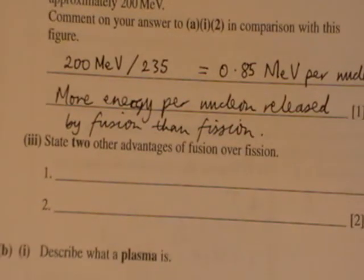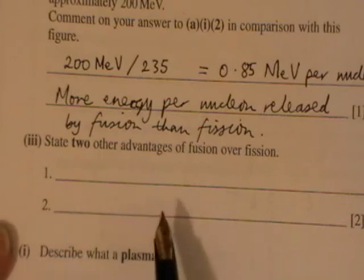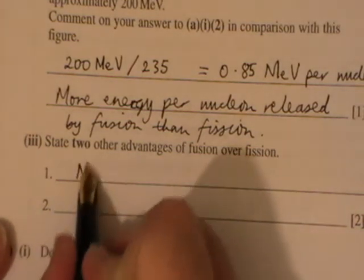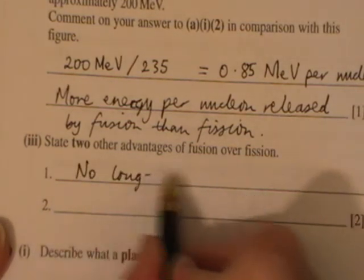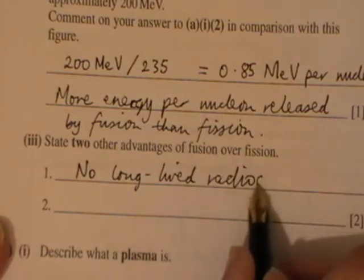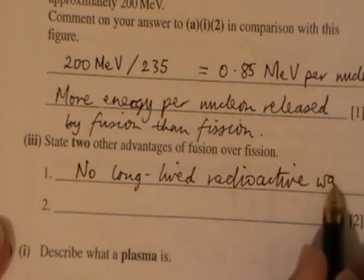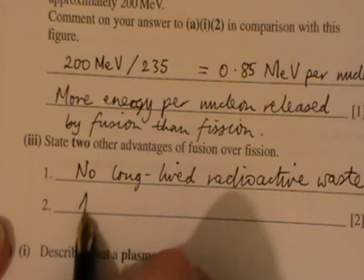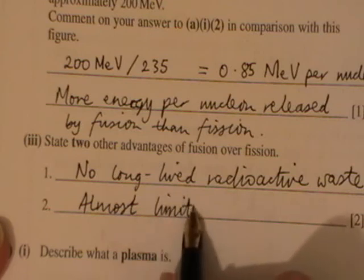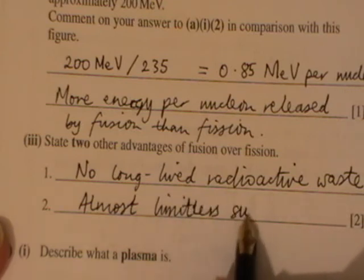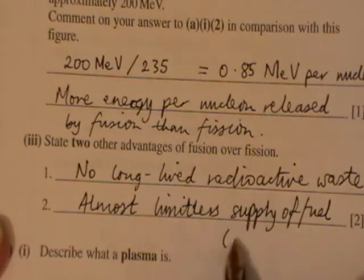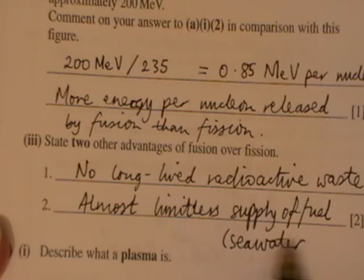State two other advantages of fusion over fission. This again is something that has come up time and again, so you need to remember this. The first thing is that there's no long-lived radioactive waste produced. And secondly, there's an almost limitless supply of fuel. Where does that fuel come from? That's in the form of water, hydrogen found in seawater.